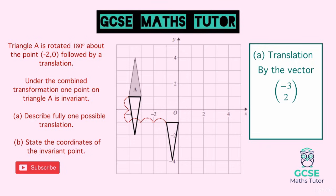There are different ways to find an invariant point for this question, but this is probably the easiest. For part B, we state the coordinates of the invariant point — the point that is halfway between the x-coordinates −3 and −4. The x-coordinate is −3.5 and the y-coordinate is 1, so the invariant point is at (−3.5, 1).